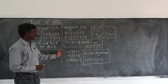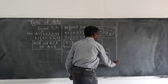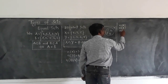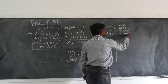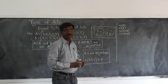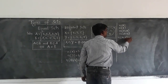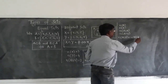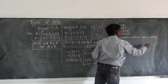Here we have a relation among the four cardinal numbers n(A), n(B), n(A ∪ B), and n(A ∩ B). The relation is: n(A ∪ B) = n(A) + n(B) − n(A ∩ B).